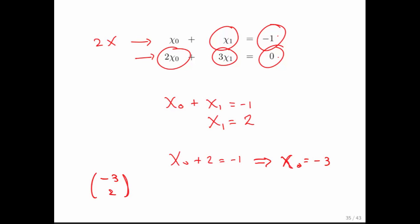And if you're diligent about it, you then plug it back into the original equation. So, if we get minus 3 plus 2, that's indeed minus 1. And 2 times minus 3 is minus 6, plus 3 times 2 is indeed 0. So, we indeed have the right solution here.